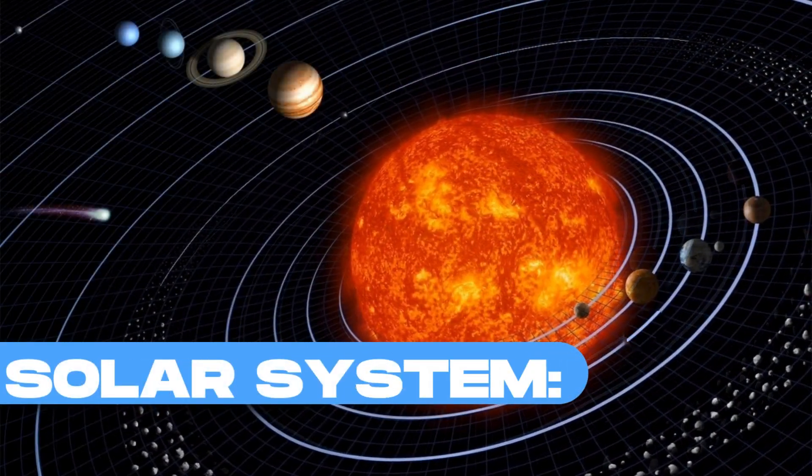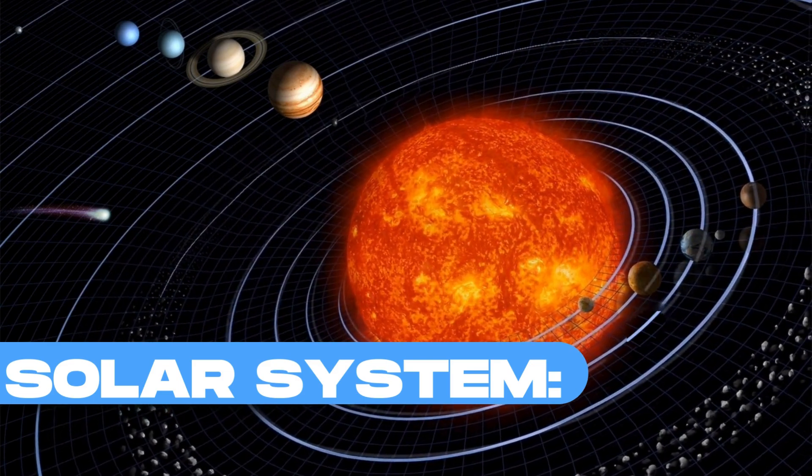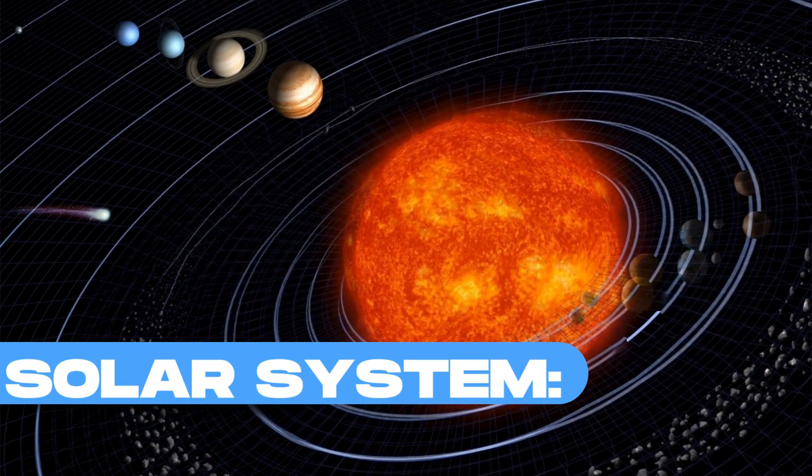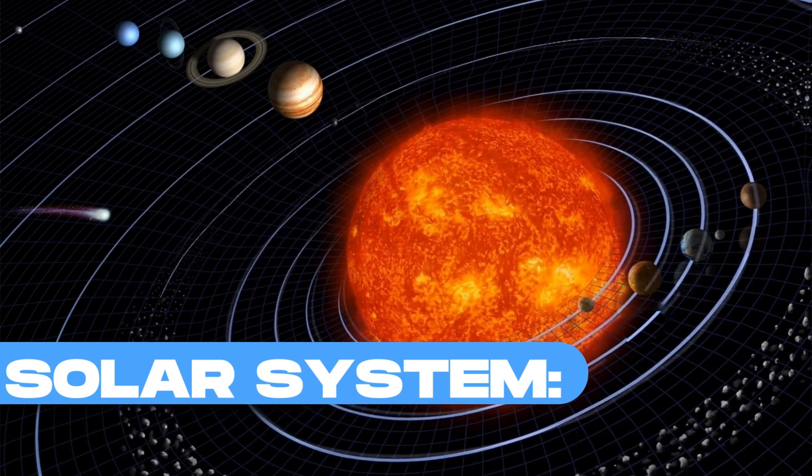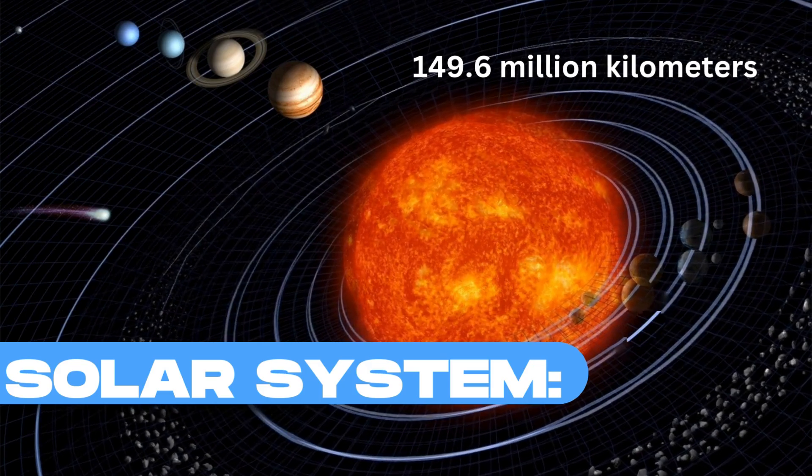The solar system consists of the Sun, eight planets, including Earth, numerous moons, asteroids, and comets. The average distance from the Sun to the Earth, known as an astronomical unit (AU), is about 149.6 million kilometers.